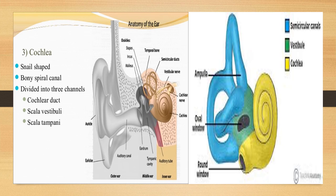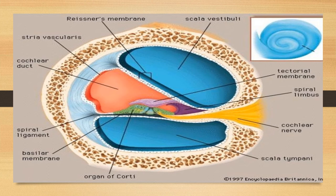The third part of the inner ear is the cochlea, which is snail-shaped. The bony spiral canal is divided into three channels: the cochlear duct (scala media), scala vestibuli, and scala tympani. The scala vestibuli and scala media are separated by Reissner's membrane, and the scala media and scala tympani are separated by the basilar membrane.